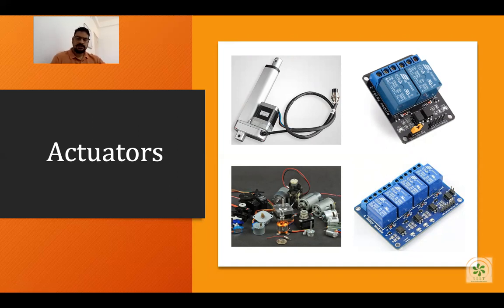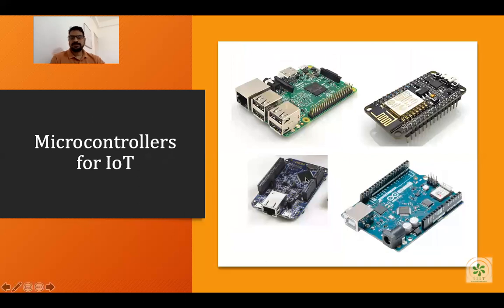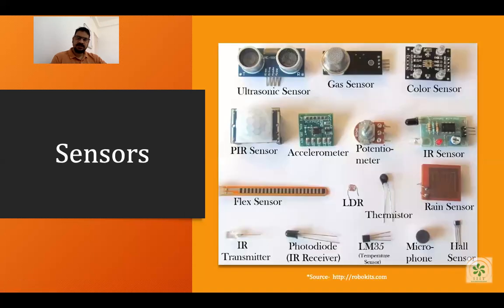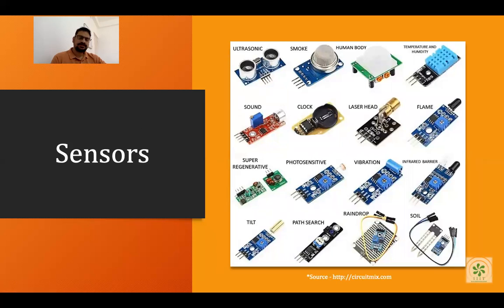Then we have various types of microcontrollers used in IoT. Examples include the Raspberry Pi, NodeMCU, and AMD microcontrollers. We have different types of microcontrollers that can be used to build the IoT infrastructure. We will see the physical infrastructure of IoT in more detail when we cover how to build it.